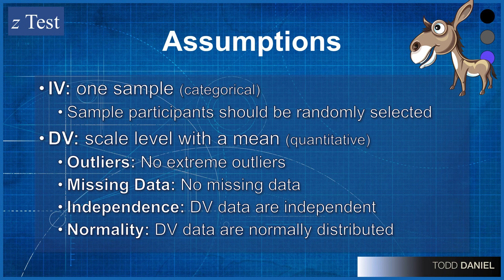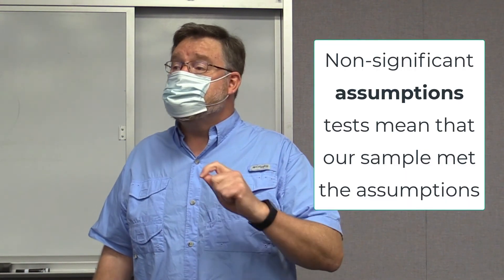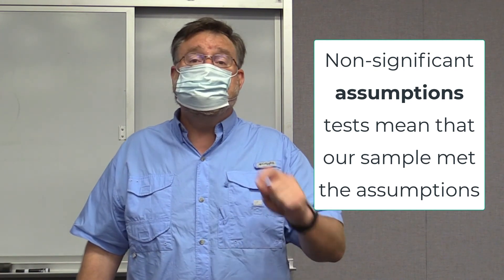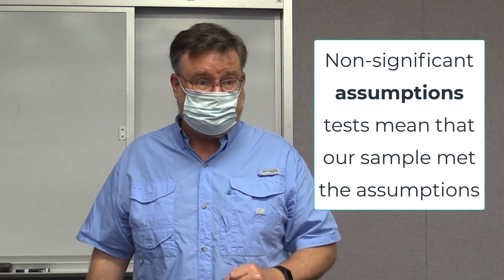The independence assumption can be checked as part of your research design, and the normality can be checked typically with software that you're using, whether it be Excel, really easy to do in JASP. We have tests for that in SPSS or R. We have lots of options for checking the normality. It's a simple check, and you may recall that with assumptions checks, we prefer that the assumption check be non-significant because that means that our data do not differ from the assumptions. We want them to not be statistically significantly different.